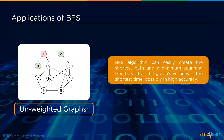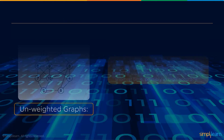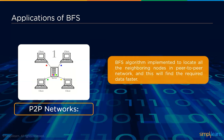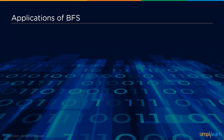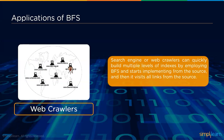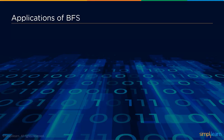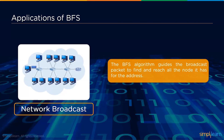BFS can be used to create the shortest path and minimum spanning tree to visit graph vertices in the shortest time with high accuracy. BFS is implemented to locate all neighboring nodes in a peer-to-peer network, finding required data faster. Search engines and web crawlers use BFS to quickly build multiple levels of indexes, starting from a source and visiting all links from it. BFS also guides broadcast packets to reach all nodes with a given address.